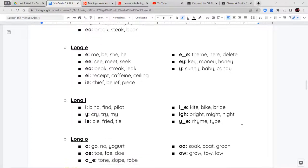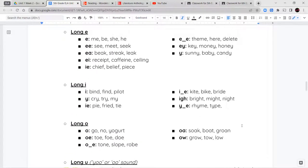Now let's focus on the long E sound. Long E can be made with just an E for short words like me, be, she, he. Or a double E like see or meet or seek. You can make this also with an E-A like beak or streak or leak. E-I like receipt or caffeine or sealing. I-E like chief, belief, or peace. E consonant letter E like theme or hear or delete. E-Y like key, money, or honey. Or just a Y like sunny or baby or candy. So baby has the long A sound and the long E sound at the end made with that Y.